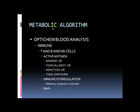Here are a couple of the metabolic algorithms. If the OptiChem blood analysis shows that the CBC — the white cell count — is high or low, and the ratios of the neutrophils and lymphocytes are off, we say something is up with the immune system.